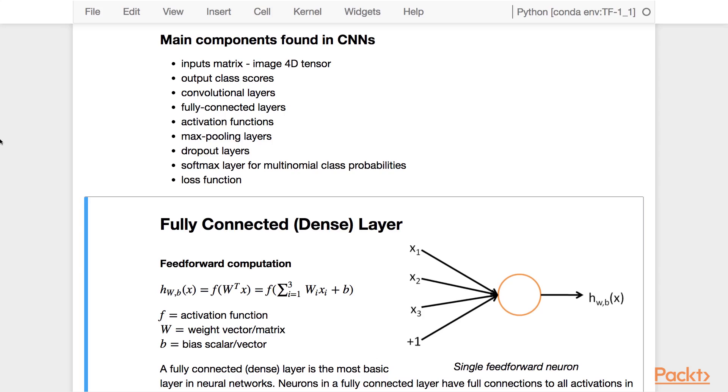The model is composed of convolutional layers, fully connected layers that include activation functions, max pooling layers, dropout layers, and then it ends with a softmax layer for multinomial class probabilities. And you also have the loss function.